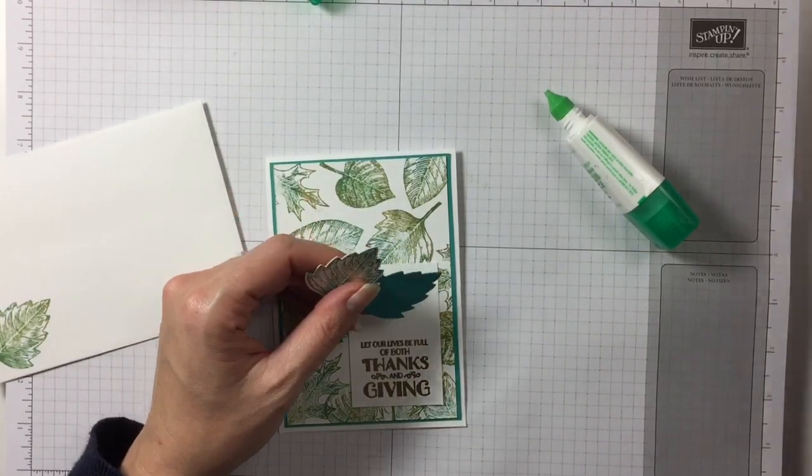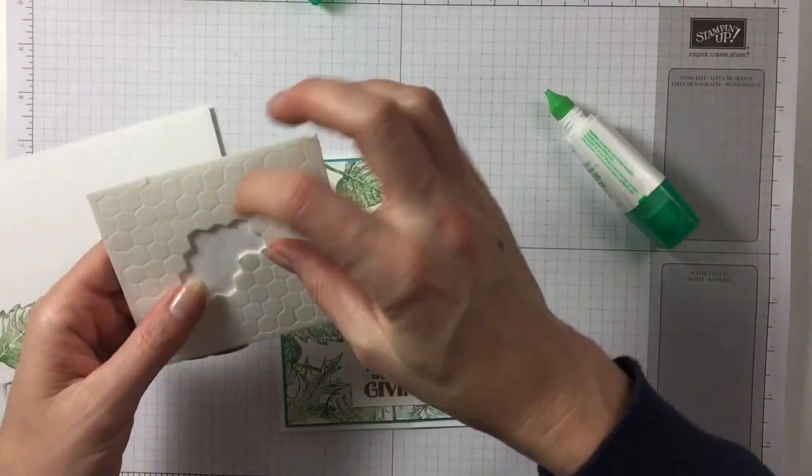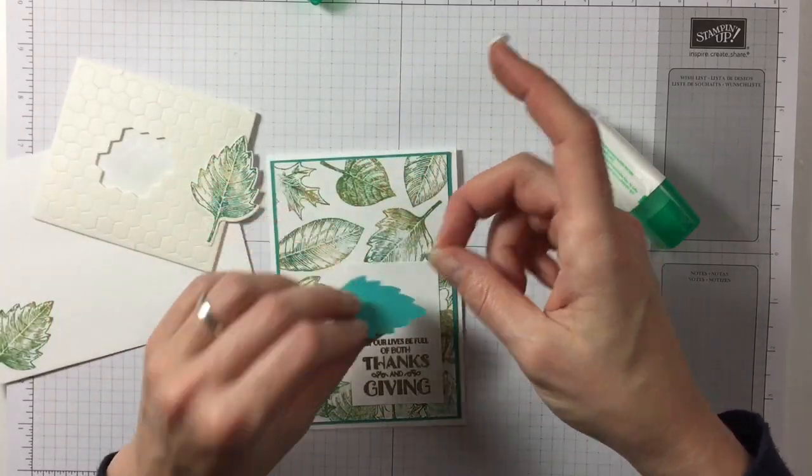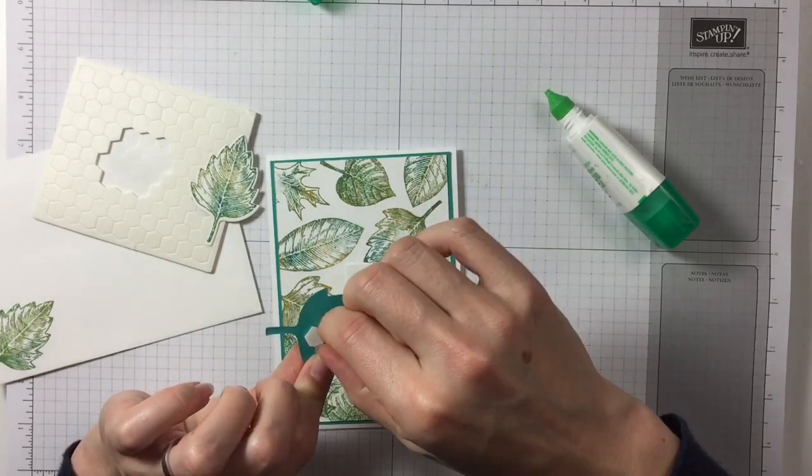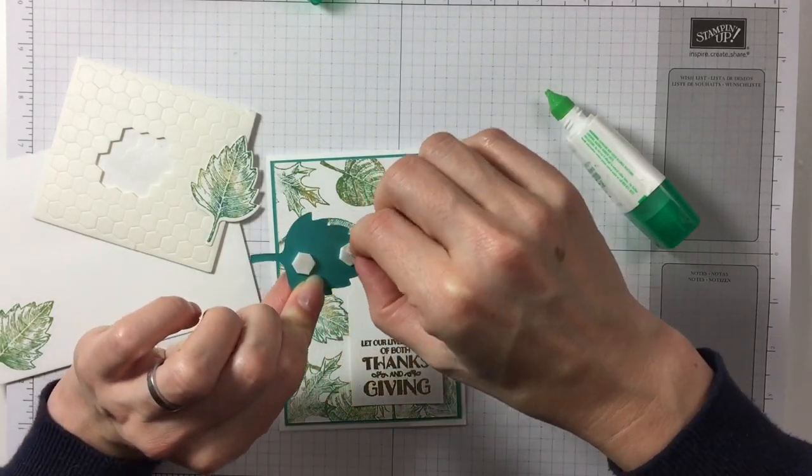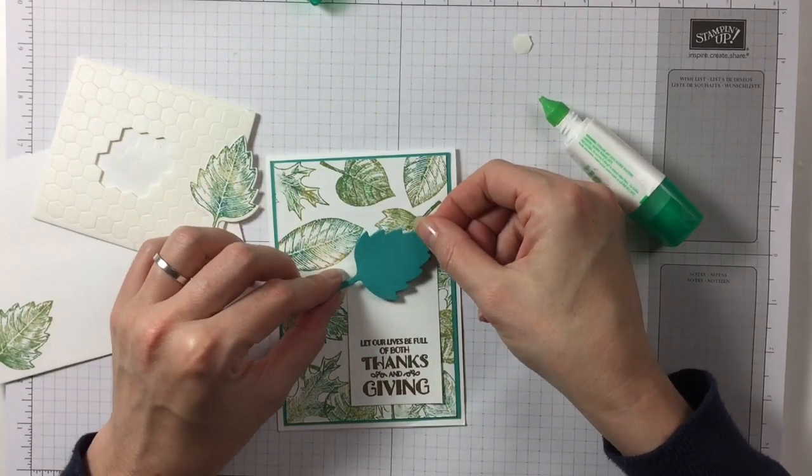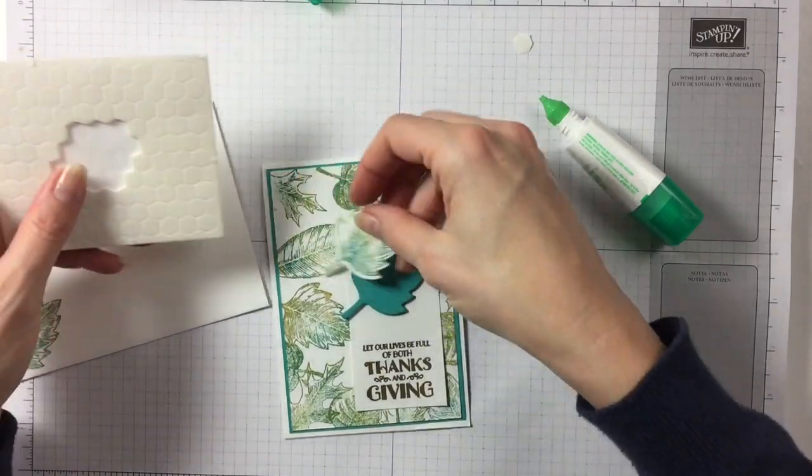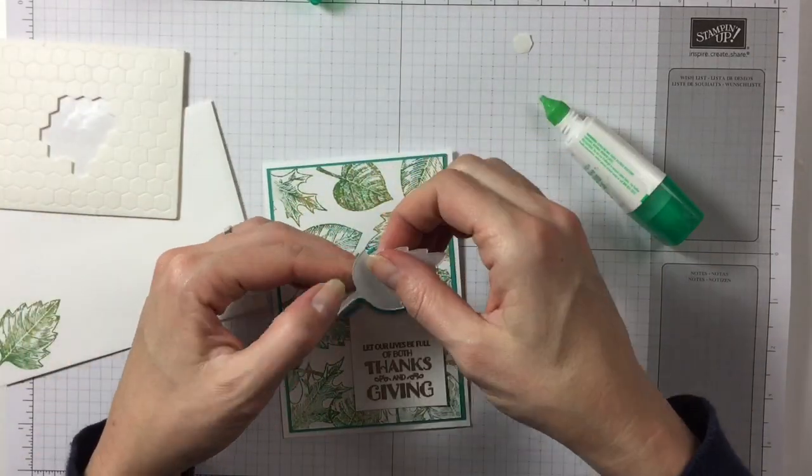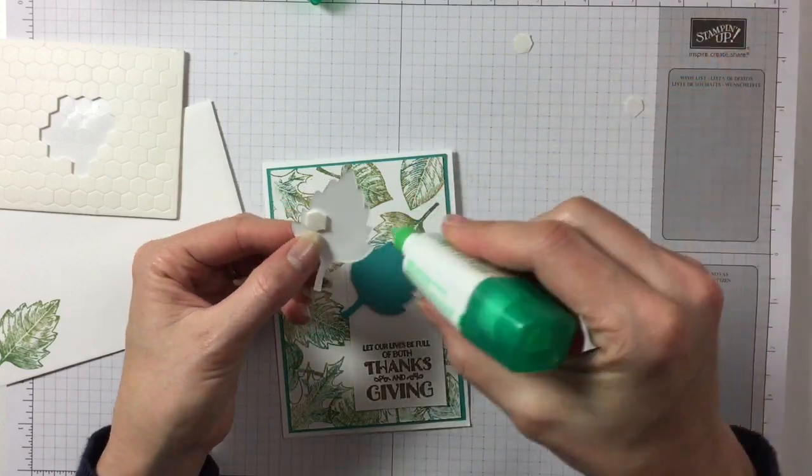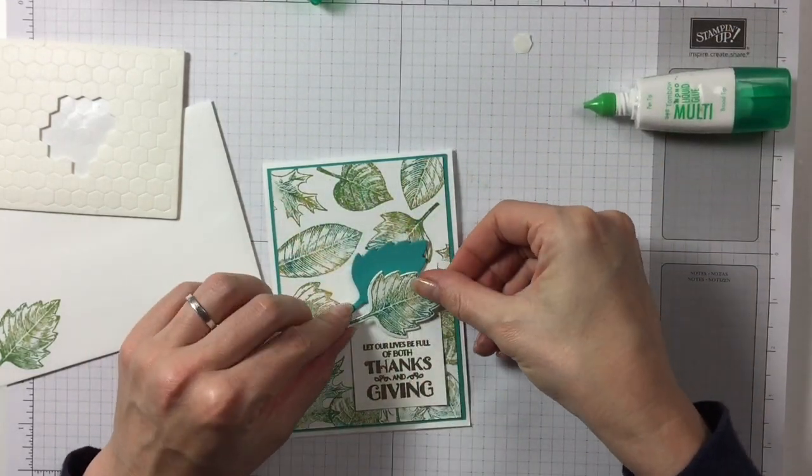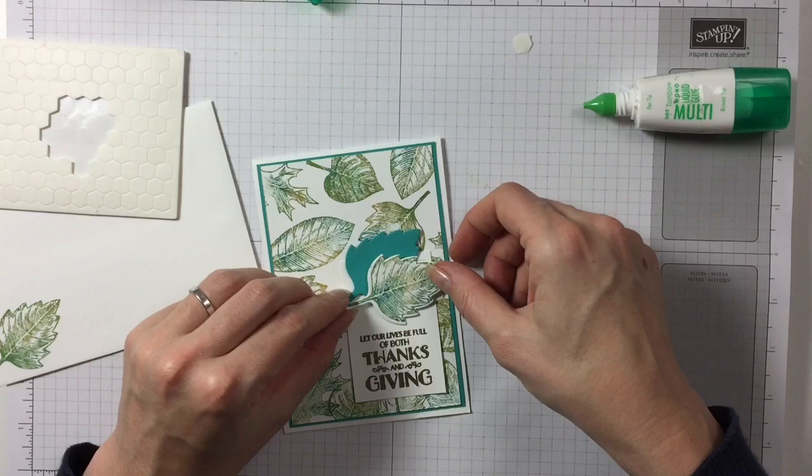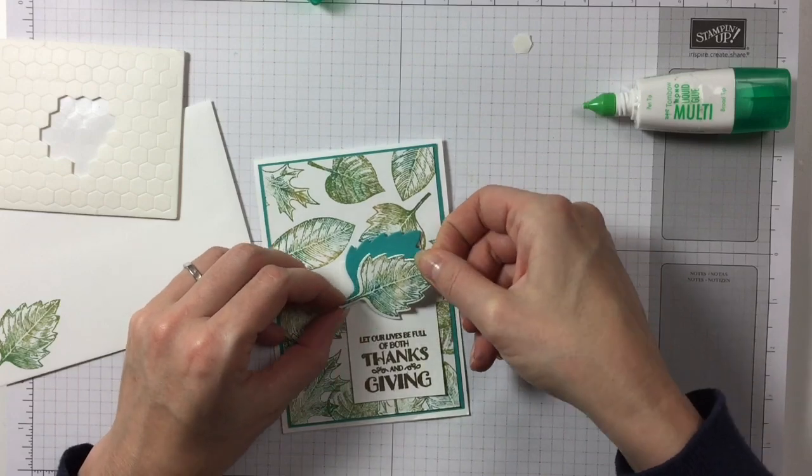And then we will need some dimensionals. And I'm going to put this leaf on dimensionals. Like that. So it comes sort of from, yep. Okay. And then this leaf, I'm going to put a dimensional here and a tiny bit of glue there because this is going to rest on the on that leaf and then like that. Like that.